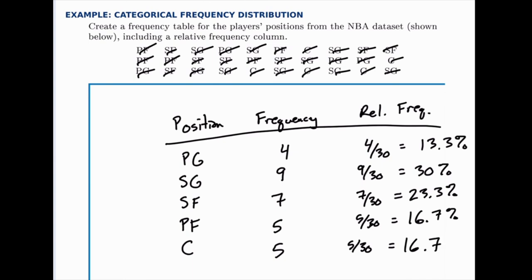So again, a frequency table is pretty easy to construct. All you have to do is count how many fall into each category. In this case, the categories were the positions of the players.